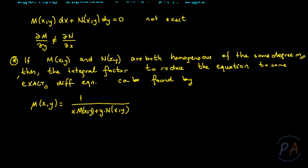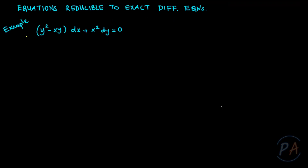If the functions M and N are both homogeneous of the same degree, let's see an example. The equation is given as (y² minus xy) dx plus x² dy equals 0. Let me name the coefficient of dx as M of xy and the coefficient of dy as N of xy, and check if this equation is exact.